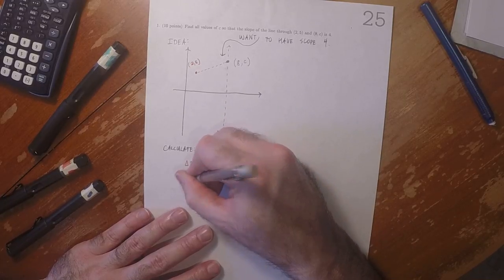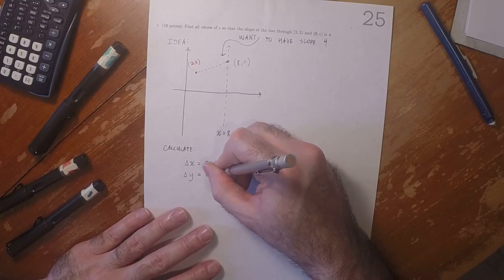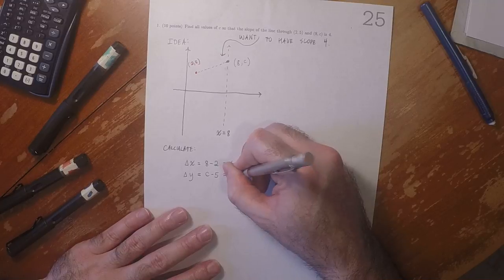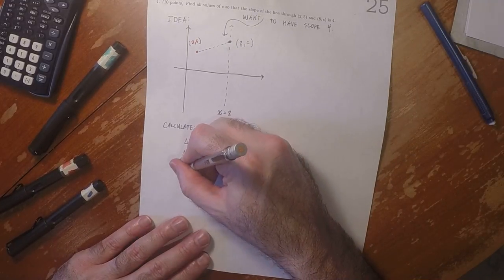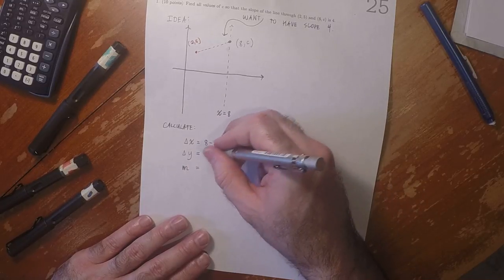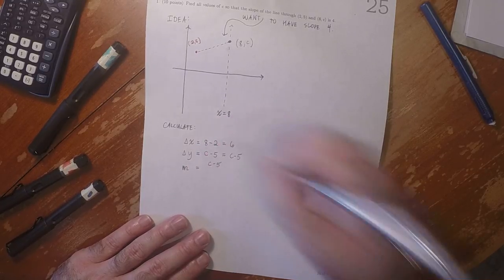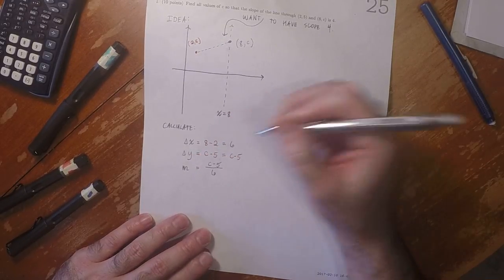And then the change in y is c minus 5, which is just c minus 5. That means that the slope is (c minus 5) over 6.